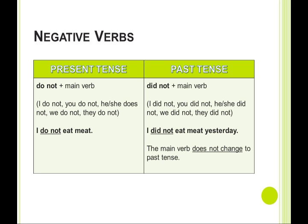There are also negative verbs. In the present tense, 'do not' plus the main verb: 'I do not, you do not, he/she does not, we do not eat meat.' In the past tense, use 'did not' plus the main verb: 'I did not, you did not, he/she did not, we did not, they did not eat meat yesterday.' Notice that the main verb does not change to past tense.